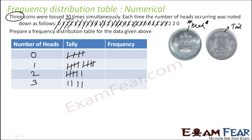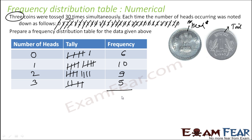If you see the results: 0 appeared 6 times, 1 came 10 times, 2 came 9 times, and 3 came 5 times. Adding these: 6 plus 10 plus 9 plus 5 equals 30, which is correct since the coins were tossed 30 times. So this is the simple frequency distribution table for the given data. The outcome can have 0, 1, 2, or 3 heads, and we can create the frequency distribution table easily.